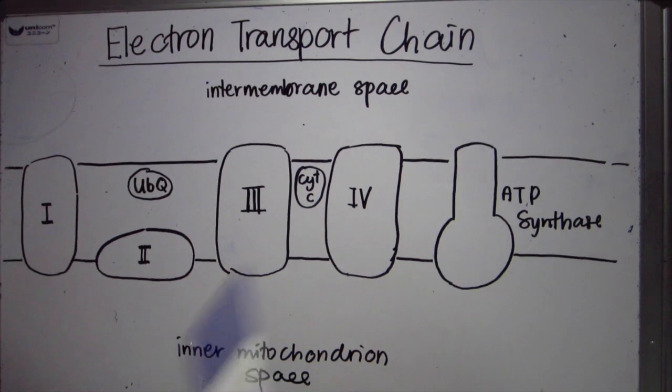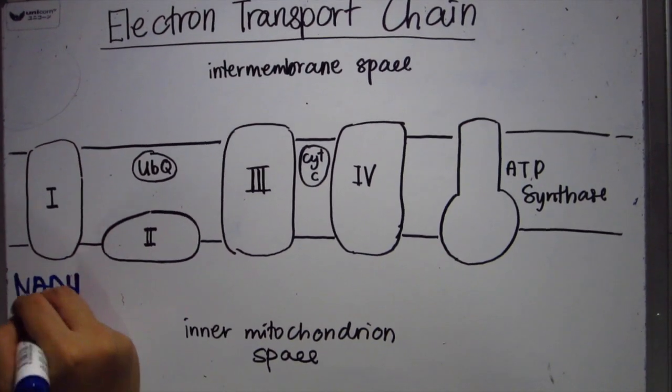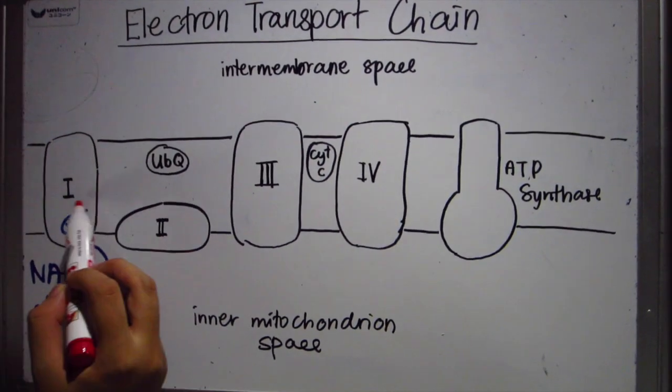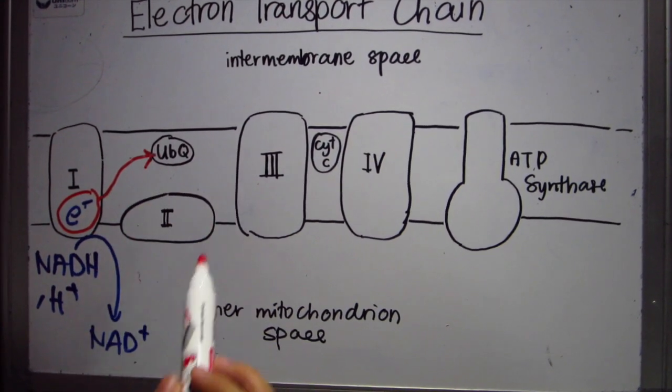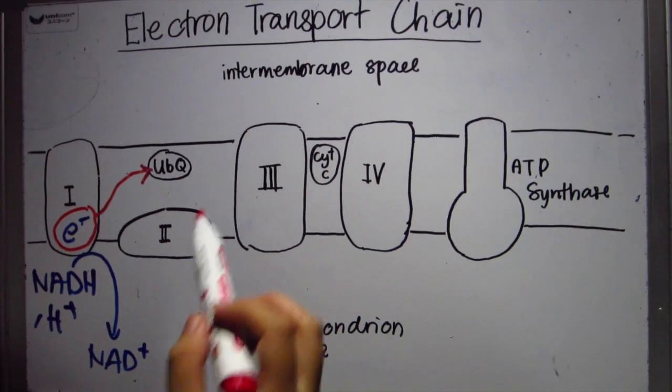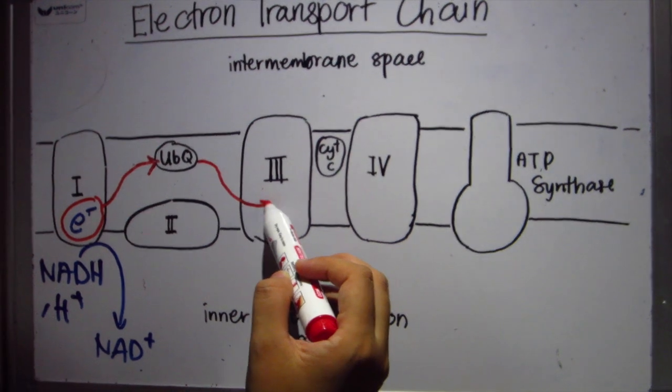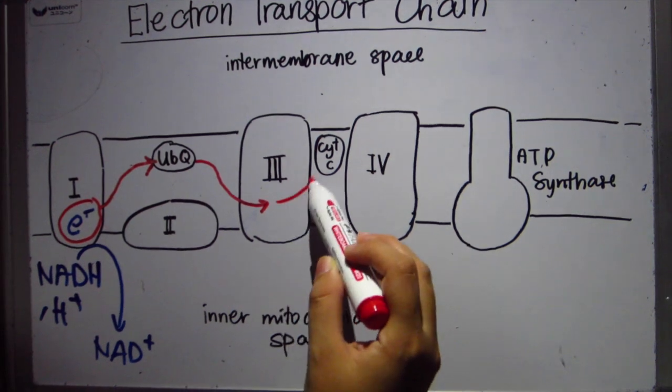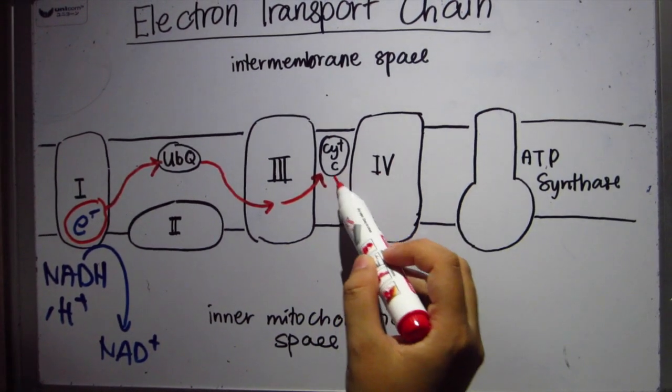If you see, it will produce ATP, first of all. NADH donates electrons to complex 1. NADH dehydrogenase passes electrons to ubiquinone. Electrons will bring to complex 3, cytochrome C reductase. It will transfer electrons to cytochrome C and then complex 4 receives the electron.